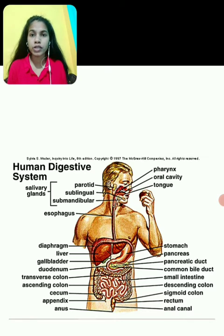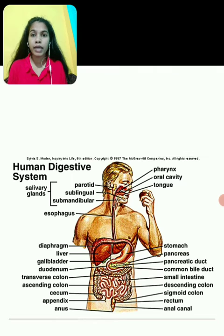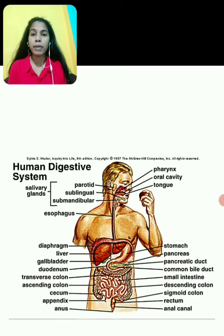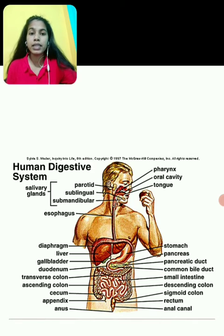The important parts of the alimentary canal start from mouth to anus. The first one is the mouth, which is used for ingestion. The second one is the vestibule, which initiates digestion by salivation and propulsion of the bolus to the pharynx. Next is the buccal cavity.